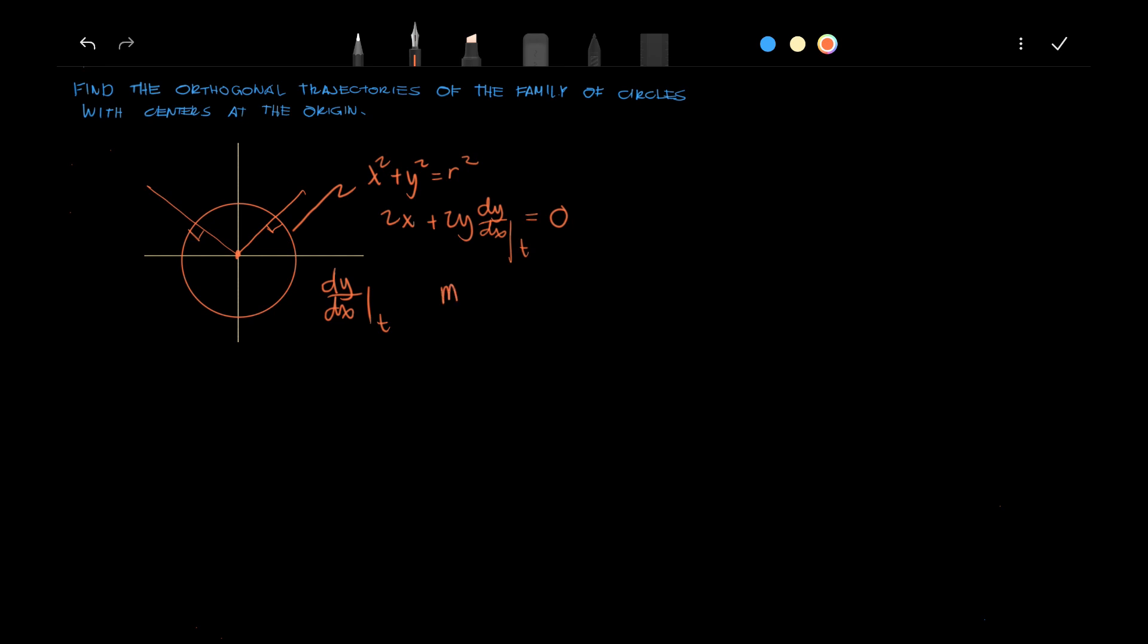So we just apply that, this will be negative 2y dx over dy equals 0. And solve this differential equation.